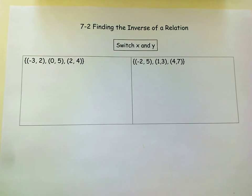Remember, a relation is a set of ordered pairs, so it's just a set of points. And this is super easy. Basically, there's one step. You switch the x's with the y's and the y's with the x's.